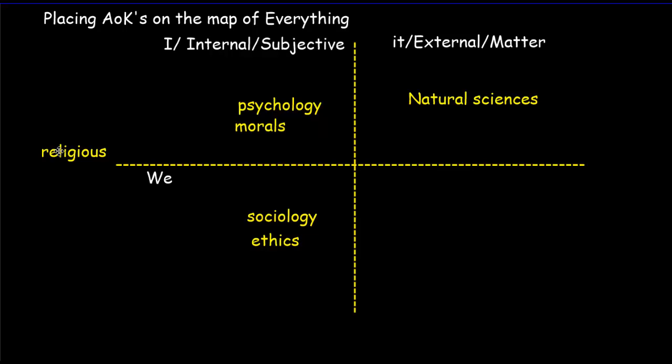Now religious thought, it certainly touches the I and the we quadrant. Both of them very strongly. But the approach is very, very different because in the religious thought, we're trying to find things out assuming there is sort of a perfect higher order realm where we can get perfect information from. So it's very different in its nature.